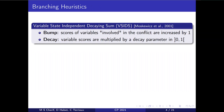In this work we'll be focusing on branching heuristics and particularly on two well-known ones. The first one is the Variable State Independent Decaying Sum, or simply VSIDS, which was introduced in 2001 and has been the most dominant heuristic since then. This heuristic maintains a score initialized to zero for each variable and has two operations: the bump, in which the scores of variables involved in the conflict are increased, and the decay, in which variable scores are multiplied by a decay parameter in (0,1).